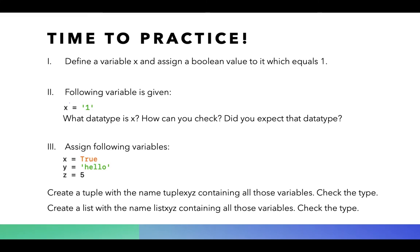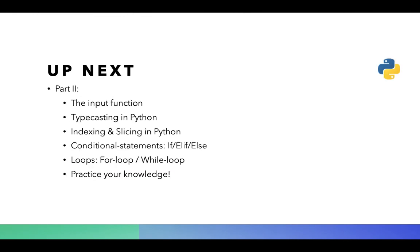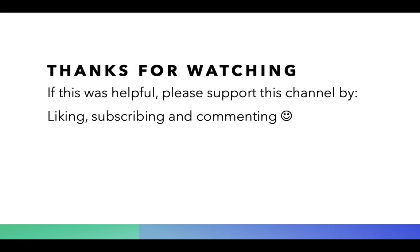It's your turn now. Take a look at these tasks and try to solve them. The solutions are in the video description. Task 1: define a variable x and assign a boolean value equal to 1. Task 2: check what data type x is and whether you expected that data type. Task 3: create a tuple and a list out of variables and verify you've created each correctly. In the next video we'll look at the input function, typecasting, indexing and slicing, conditional statements such as if, elif, and else, for loops and while loops, and again practice your knowledge. Thank you very much for watching — please support this channel by liking, subscribing, and commenting. See you next time, bye bye.